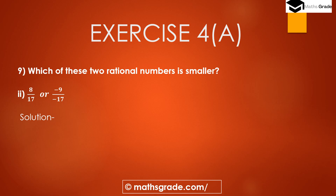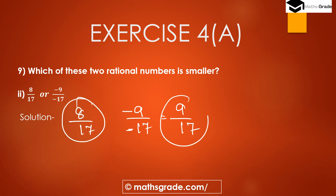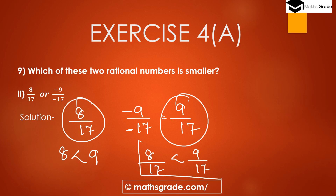Now the second part: 8 divided by 17 or minus 9 divided by minus 17. We can write minus 9 divided by minus 17 as 9 divided by 17, since minus and minus cancel. Now between 8 divided by 17 and 9 divided by 17, since 8 is less than 9, we get 8 divided by 17 is less than 9 divided by 17. So the smaller rational number is 8 divided by 17.